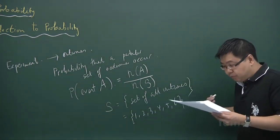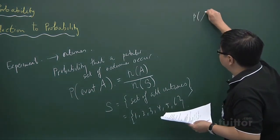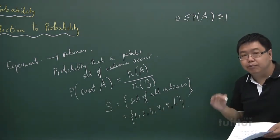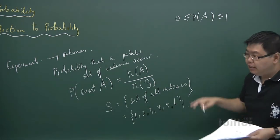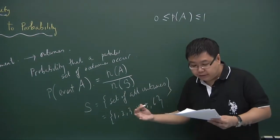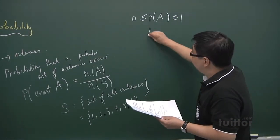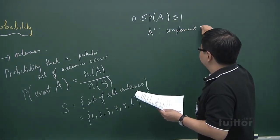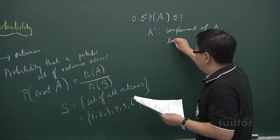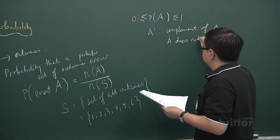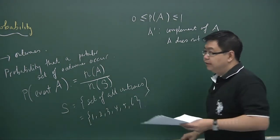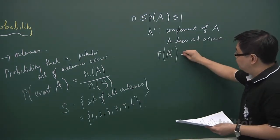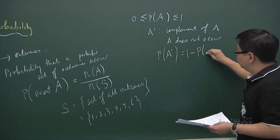Some properties of probability. The first property is that the probability of an event occurring is always between zero and one inclusive. Zero means that it's not possible for A to occur, and one will be the case when it will always occur. If A prime denotes the complement of A — meaning that A does not occur — then the probability that A complement occurs will be one minus the probability that A occurs.